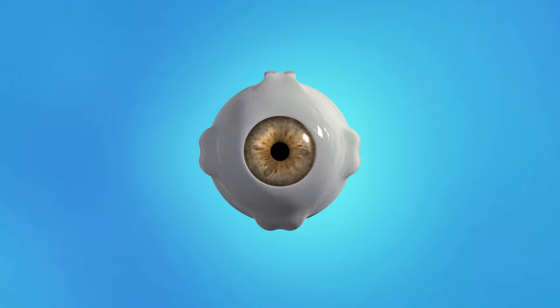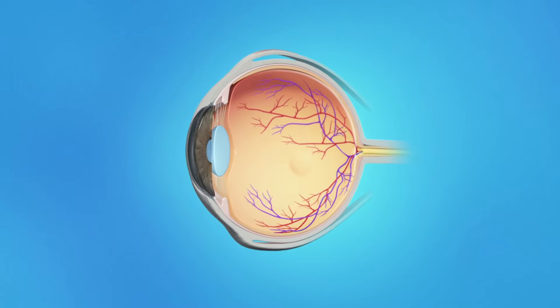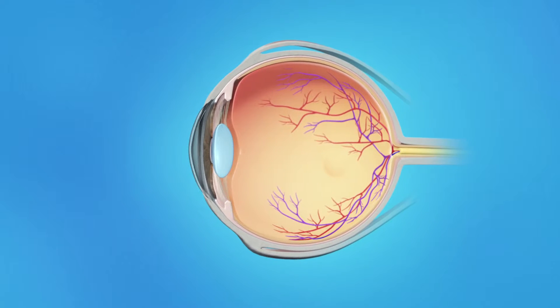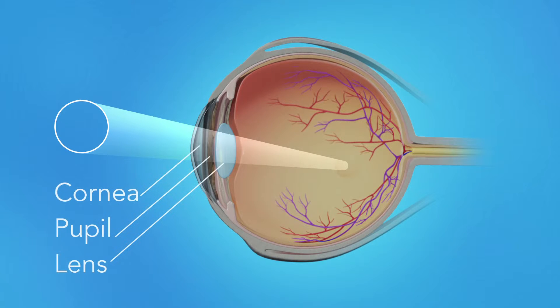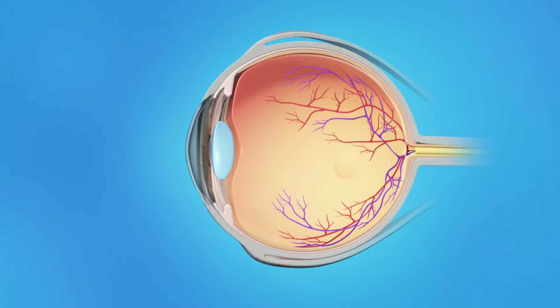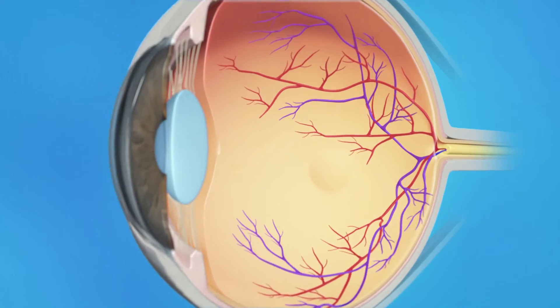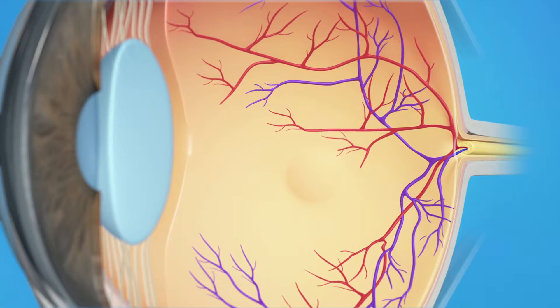To understand how a macular pucker affects your vision, let's take a look at how the eye works. Light rays enter the eye through the cornea, pupil, and lens. These light rays are focused on the retina, the light-sensitive tissue lining the back of the eye.